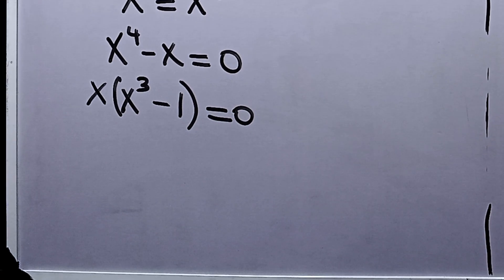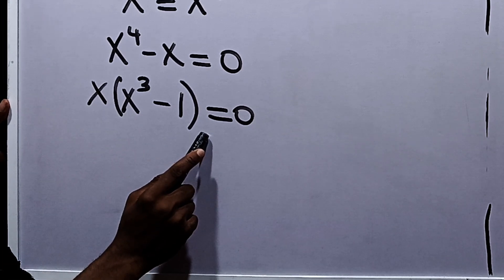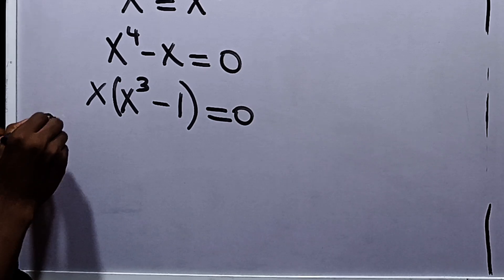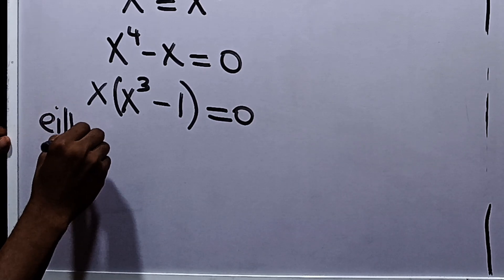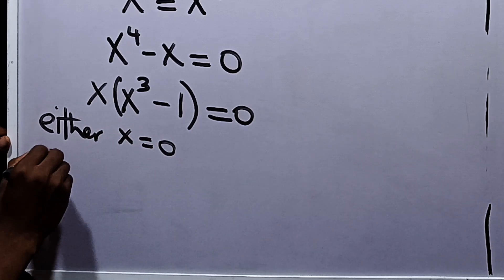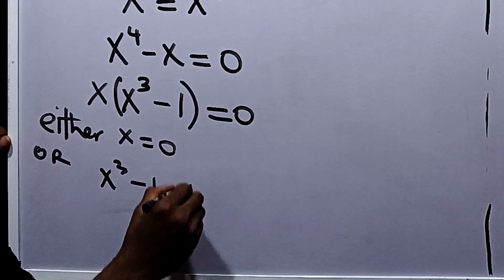Now at this point, we now have a situation where the product equals 0. It's either that this is equal to 0 or this is equal to 0. So it's either x is equal to 0 or x cubed minus 1 is equal to 0.